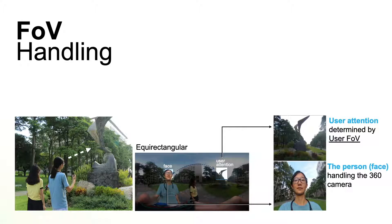We introduce the first handling technique, which is the FOV handling, that allows users to address user's attention in the scene by just facing it at the capture time. Then our algorithm can identify the user attention region in the equirectangular image according to the user's face directions.